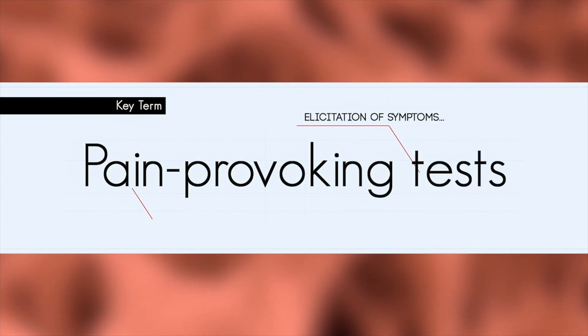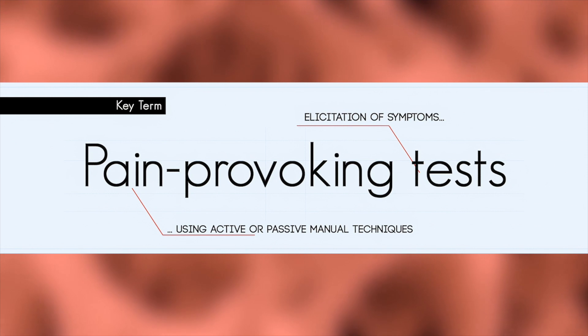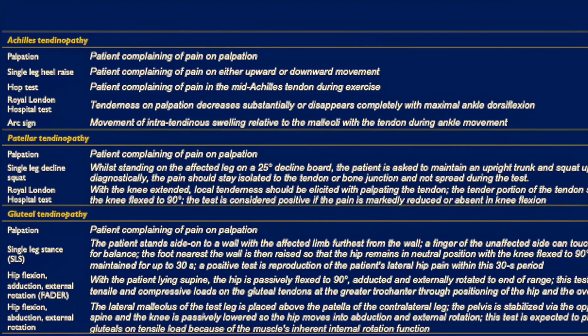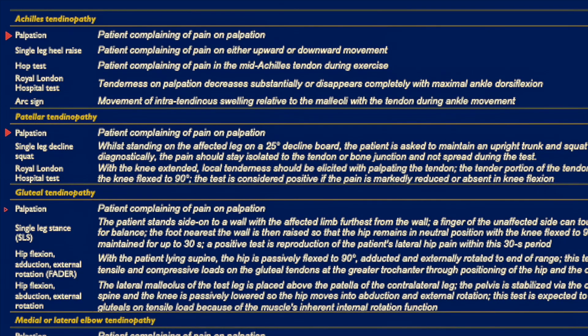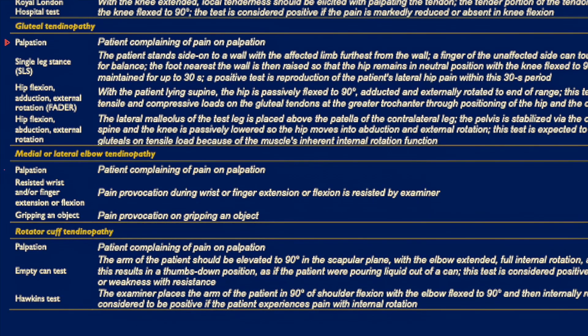When making a diagnosis of tendinopathy, most important information can be garnered through a detailed clinical examination that determines whether the patient has a history of load-related tendon pain. For tendons that can be palpated easily, like the Achilles, localized tenderness can confirm the diagnosis. In more deeply located tendons, like the rotator cuff tendons, palpation alone can be difficult, and this is where pain-provoking tests play a role. For each anatomical location — Achilles, patellar, gluteal, elbow, and rotator cuff — palpation is considered an important diagnostic test.